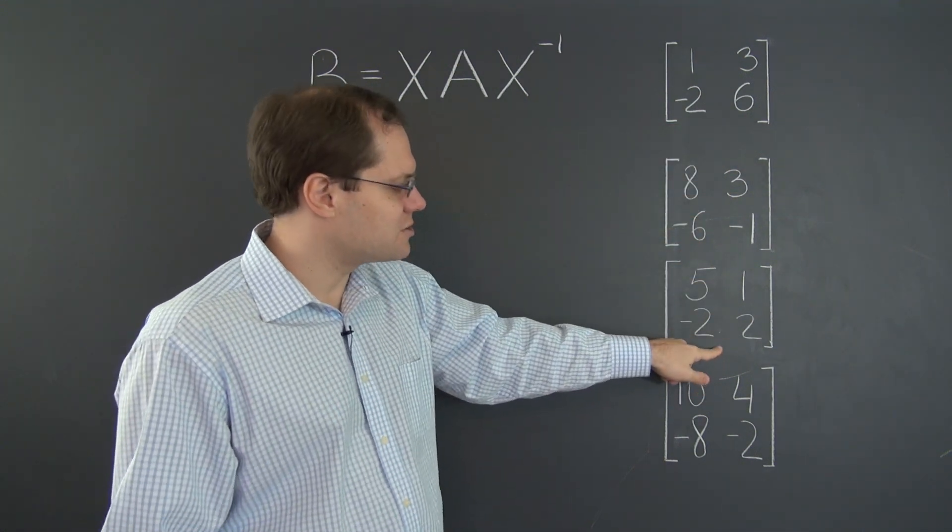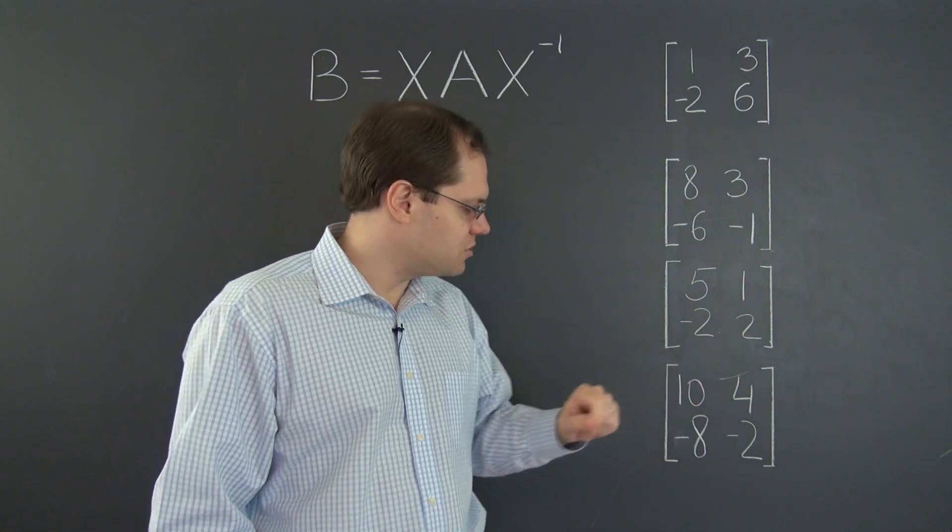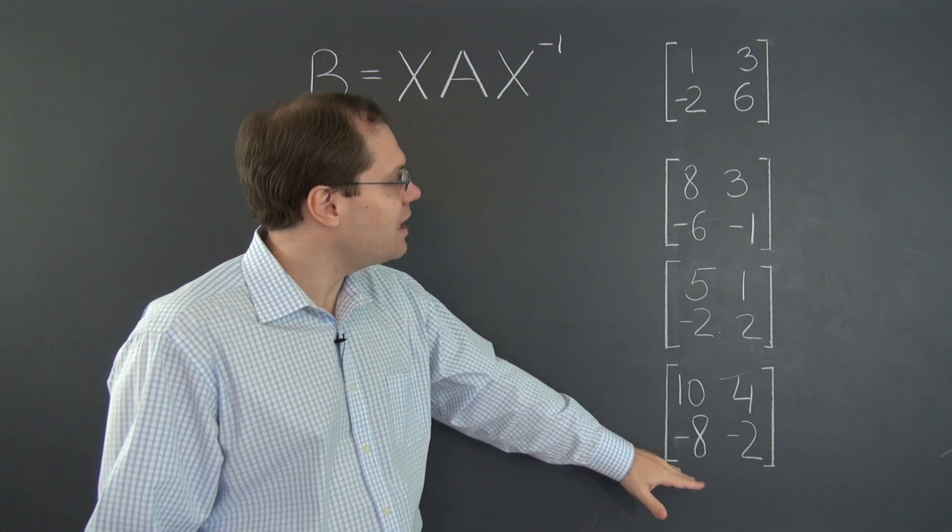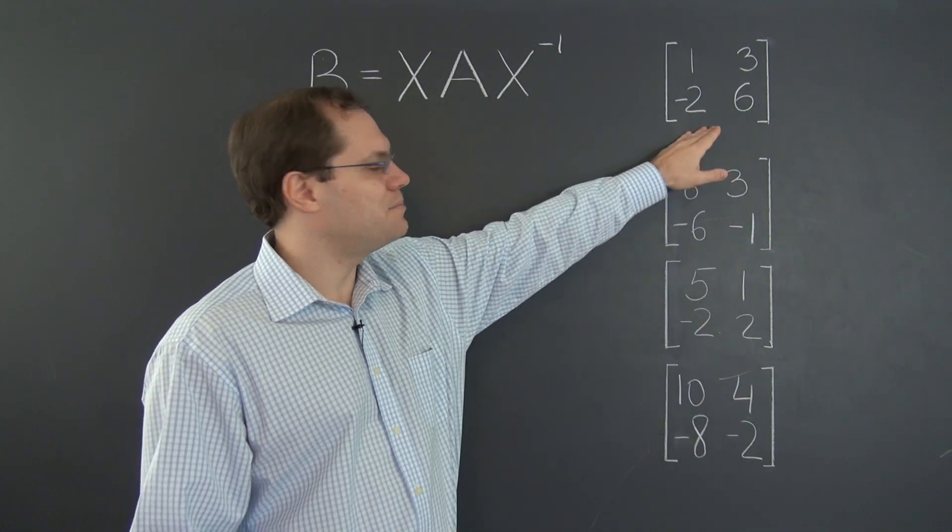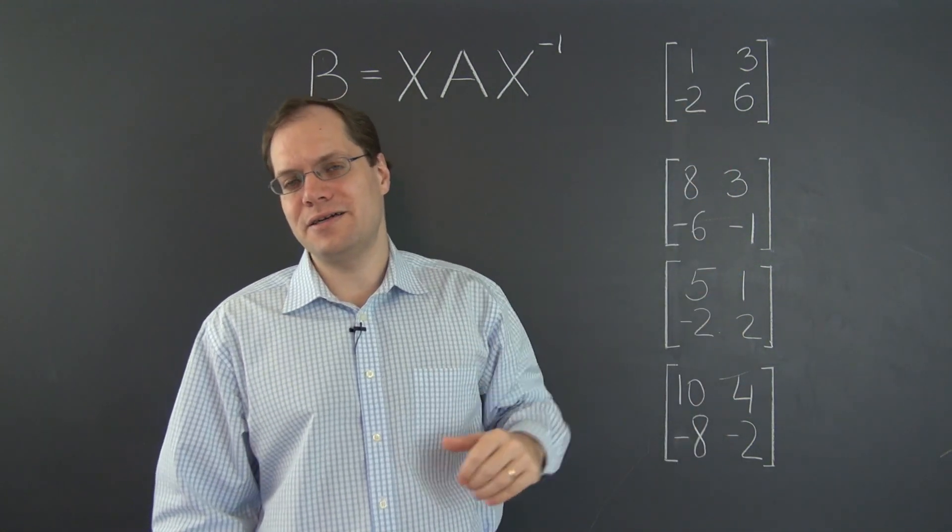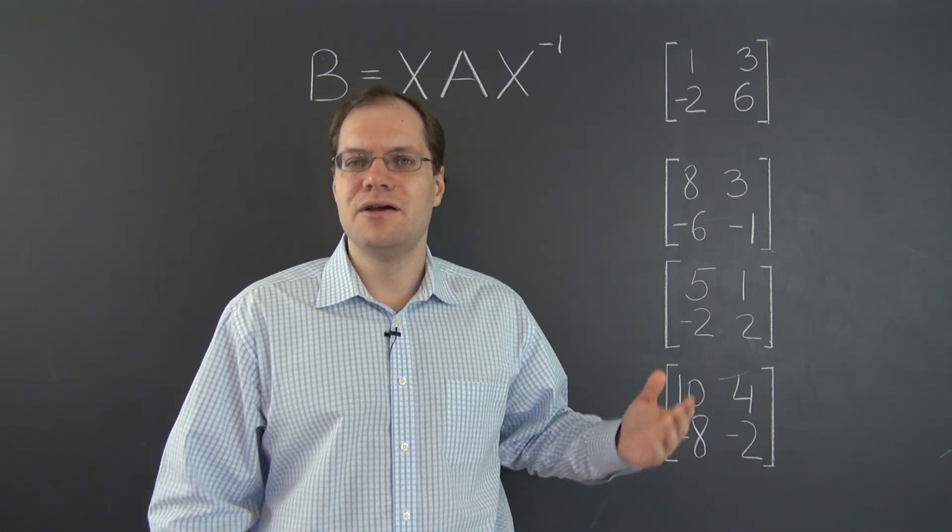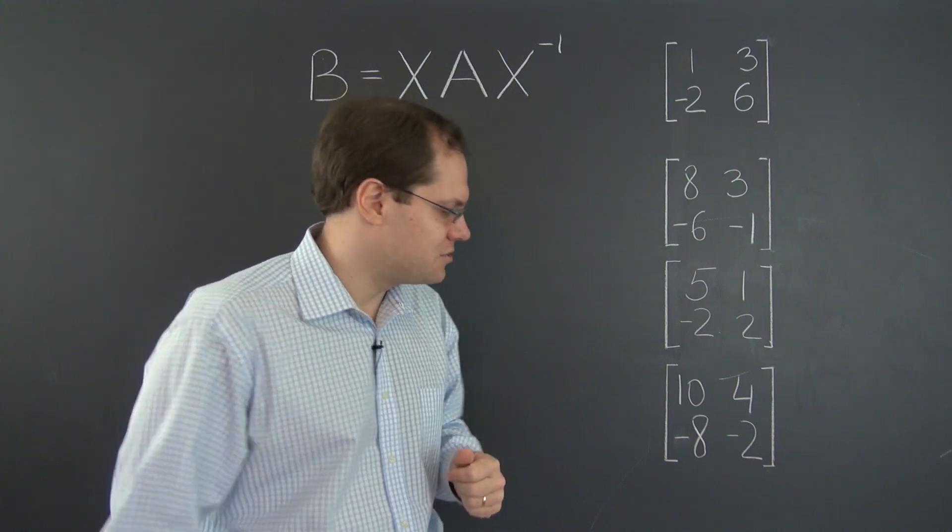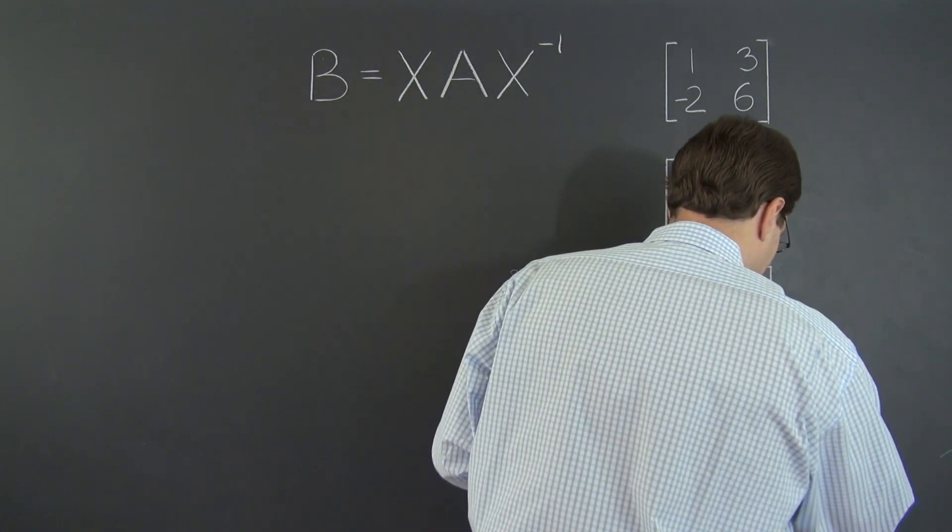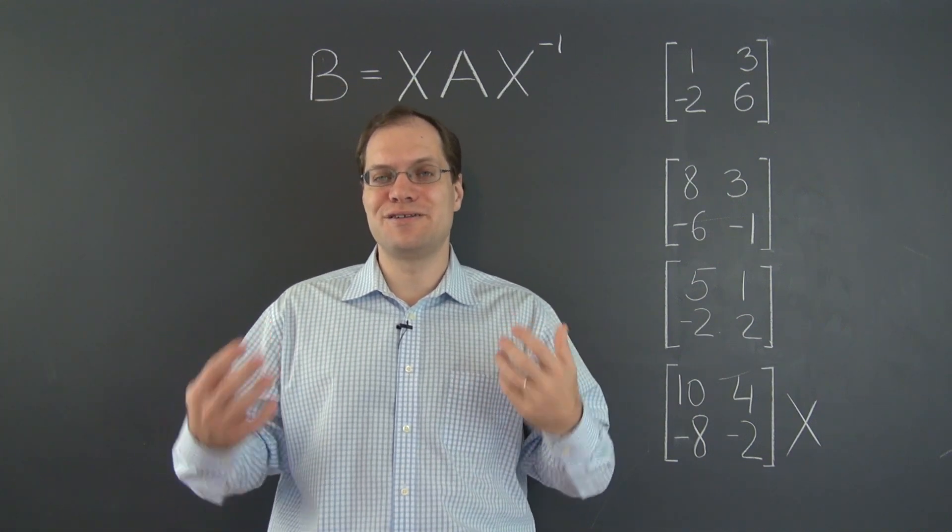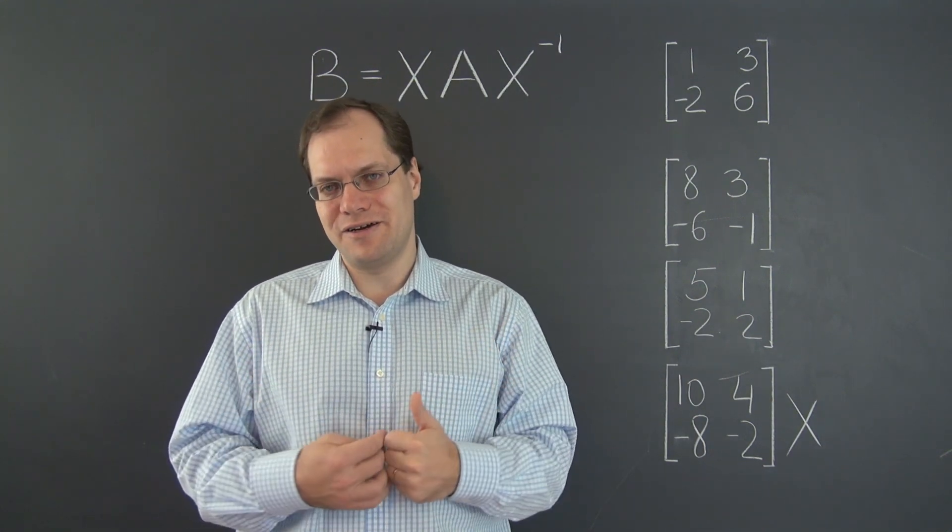The trace of this matrix is also 7, so it's still a candidate. And the trace of this matrix is 8, so this one cannot be related to this matrix by similarity transformation. Different trace, which means different eigenvalues, which means no similarity relationship. So this one's out, and we just used our first additional nice property of similarity transformations.